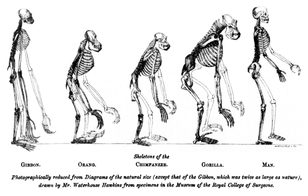The basis of the central principles of evolutionary ecology can be attributed to Charles Darwin (1809–1882), specifically in referencing his theory of natural selection and population dynamics, which discusses how populations of a species change over time.